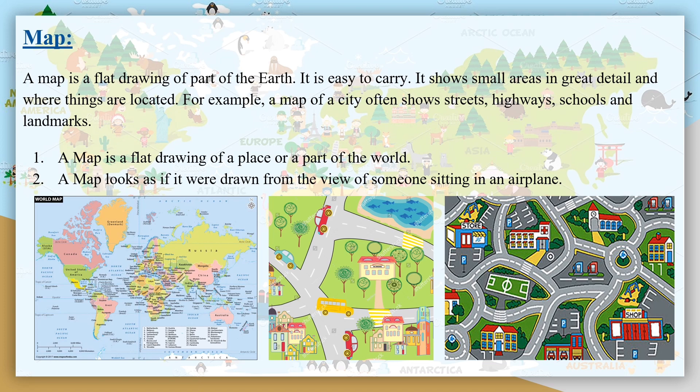For example, a map of a city often shows streets, highways, schools and landmarks. A map is a flat drawing of a place or part of the world.